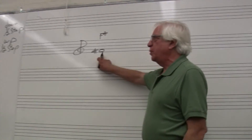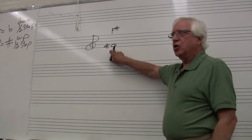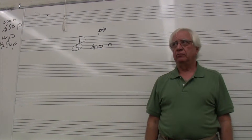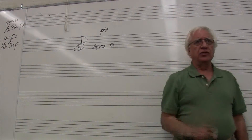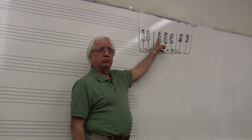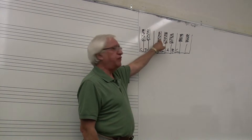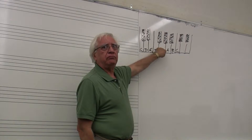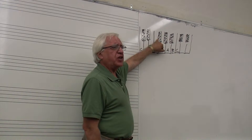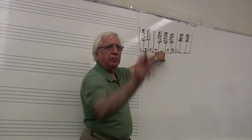Here I am on F-sharp. I want a diatonic half step above F-sharp. What do I call it? Since it's diatonic, it has to have a different letter name than F-sharp. So what is the letter name? G.